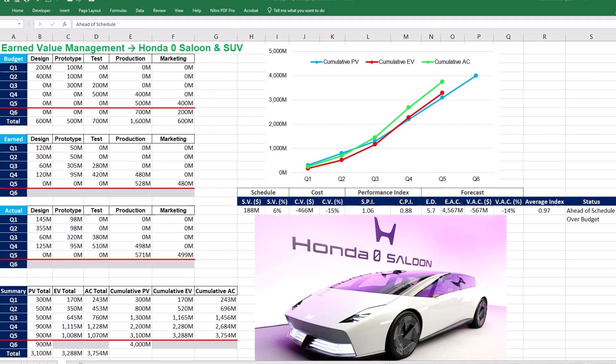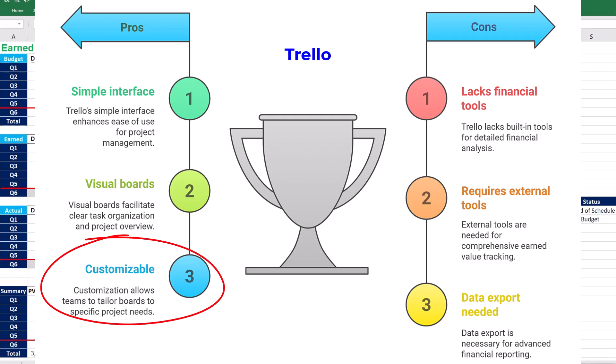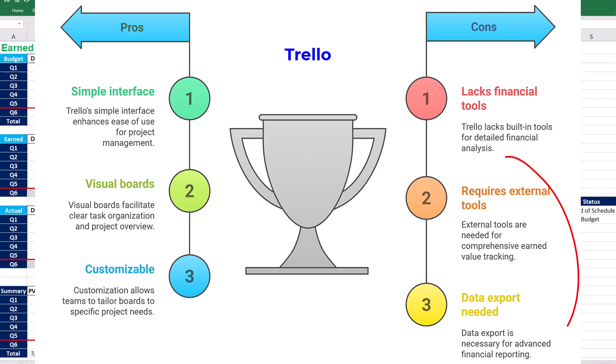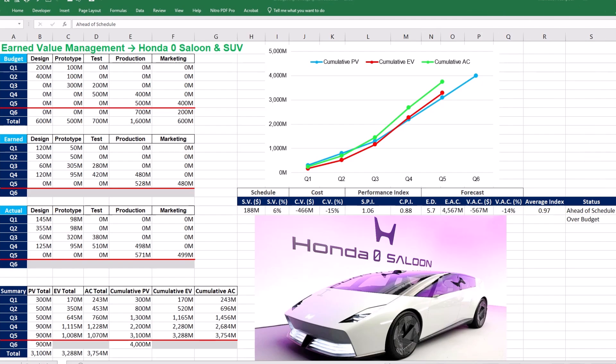Trello is known for its simplicity and ease of use, adopted by many Agile teams because of its visual board-based interface. Unfortunately, Trello doesn't offer earned value analysis out of the box in the same way Excel and Primavera P6 do. However, its flexibility allows project teams to customize boards, lists, and cards to approximate earned value tracking — though using Trello for EVM requires connecting it with external reporting tools or exporting data for further analysis in Excel. Trello is primarily designed for task management and collaboration rather than detailed financial analysis, so it might not be the best choice for rigorous financial tracking.